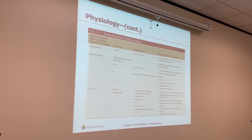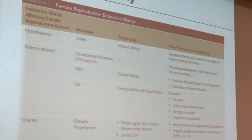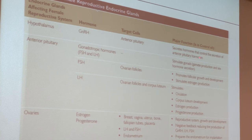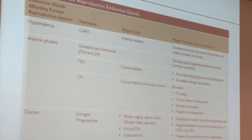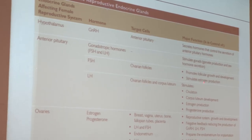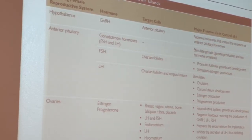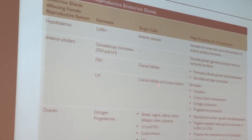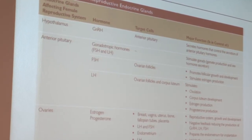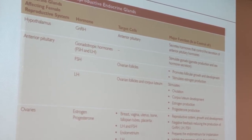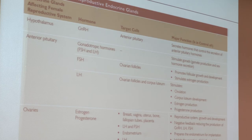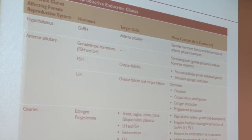The hypothalamus puts out gonadotropin-releasing hormones targeting the anterior pituitary gland. The anterior pituitary gland then secretes FSH and LH. FSH promotes follicular growth and development, and the follicles put out estrogen. The ovarian follicle then turns into a corpus luteum after releasing the egg. The other four or five follicles that were trying to grow into a graafian follicle are absorbed into the body and will appear hypoechoic because they have involuted on themselves.